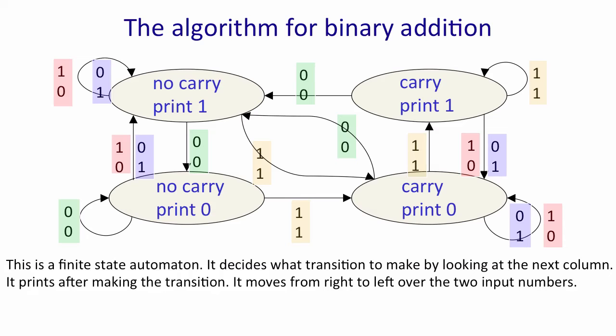So if you look on the top right, it's in the carry state and it's just printed a one. If it sees a one, one, it goes back into the same state and prints another one. If, however, it sees a one, zero or a zero, one, it goes into the carry state but prints a zero. If it sees a zero, zero, it goes into the no carry state and prints a one. And so on.